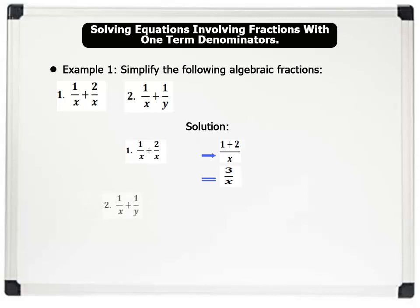2. 1 over x plus 1 over y. To solve this, we find the equivalent of both fractions. To find the equivalent fraction of 1 over x, we multiply through by y, which gives us y over xy. And for 1 over y, we multiply through by x, which gives us x over yx. Now, the equivalent fractions have the same denominators, so we simply add up their numerators, and that gives us x plus y over yx.